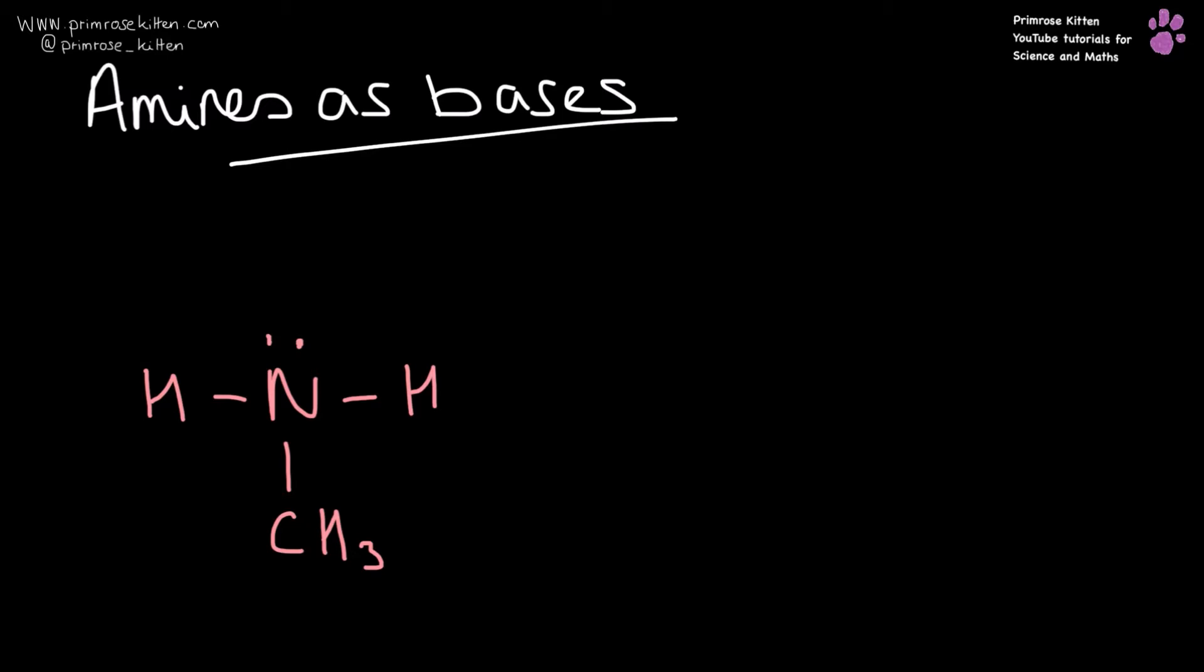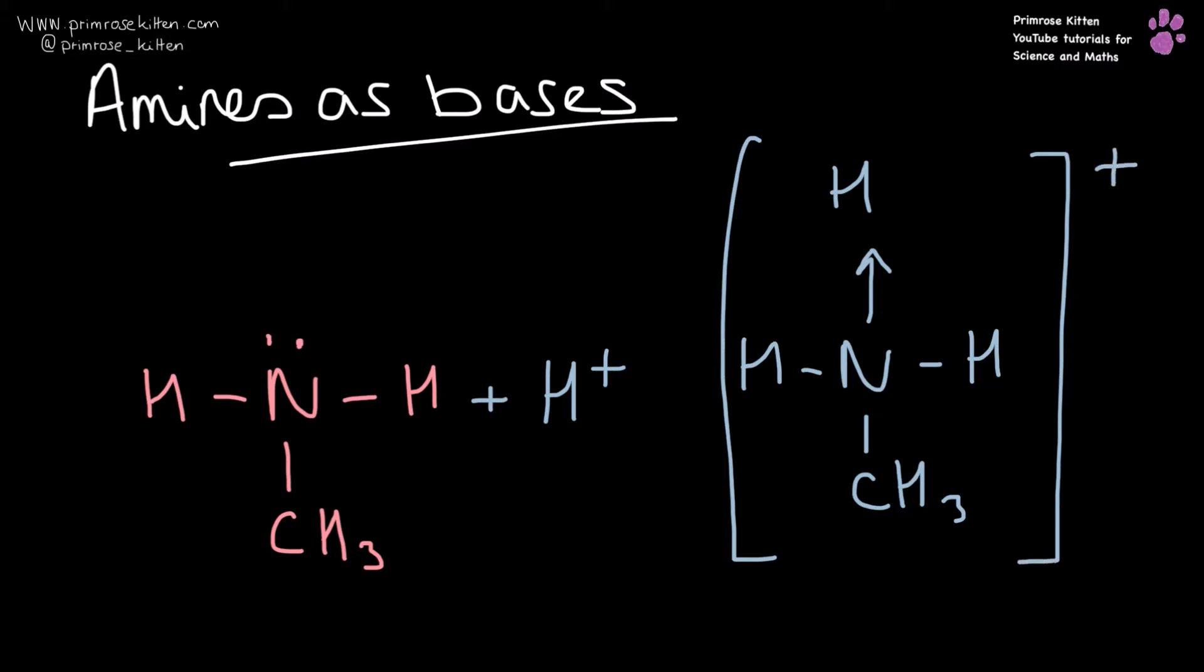So here we have methyl amine, and it is going to act as a base. It is a base because it has a lone pair of electrons that are available for donation, and it is going to be a proton acceptor. We are going to add in a hydrogen ion because remember, a hydrogen ion is just a proton. That is going to form a dative covalent bond. You may also know it as a coordinate bond. Up here, and then we are going to form an ammonium ion.